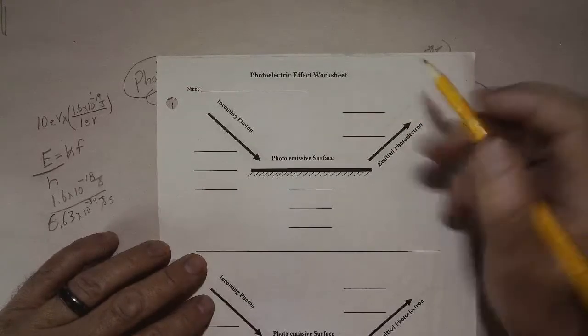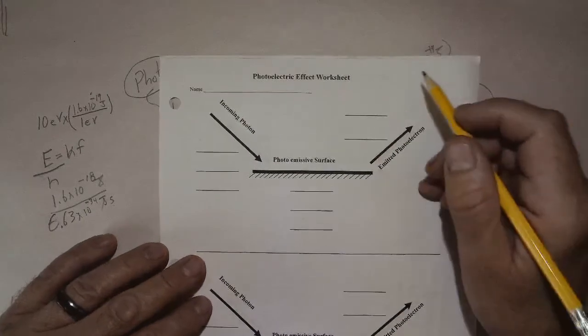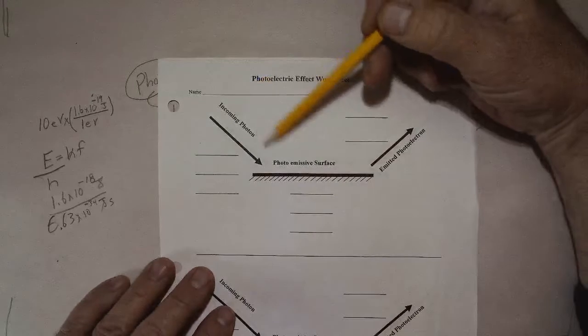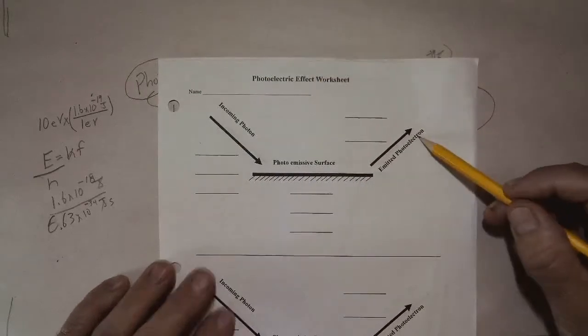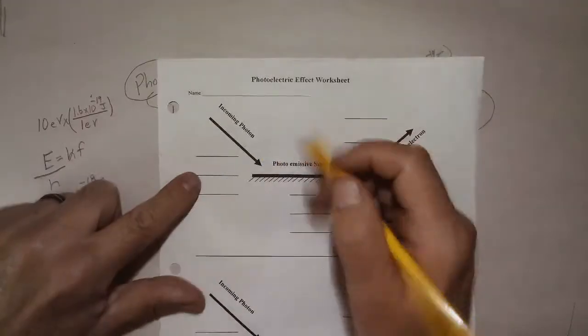A photoelectric effect mathematics sheet here, and this makes it a lot easier. You can see the incoming photon here, the ejected photoelectron here, and the photoemissive surface here. So what are the numbers we have?